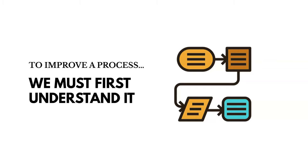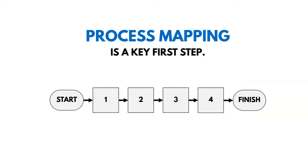To improve a process, we first have to understand it. We have to capture the as-is state. And process mapping is a key first step to understanding our process. We have to know what steps are performed.